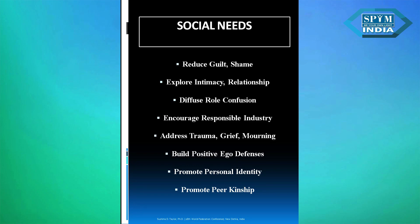Now we come to the social needs, remembering Maslow's hierarchy. We want to reduce guilt and shame, explore relationship issues, and diffuse role confusion. We want to let clients know they no longer have to wear the role of addict, alcoholic, or user — we need to change that role. We encourage personal and social responsibility, address grief and trauma, build positive ego defense mechanisms, and promote personal identity and peer kinship. The recovering community and 12-step fellowship also does a lot of that peer kinship promotion.